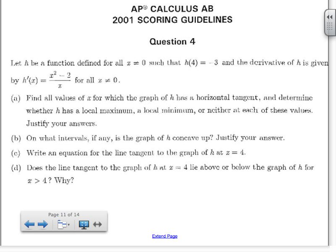Part A says find all values of x for which the graph of h has a horizontal tangent. So when I hear horizontal tangent I'm thinking the slope is equal to 0. And determine whether h is a local maximum, a local minimum, or neither at each of these values.